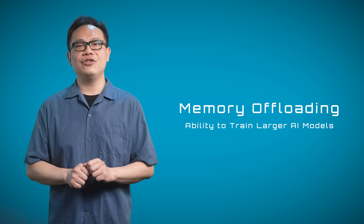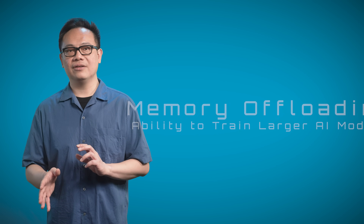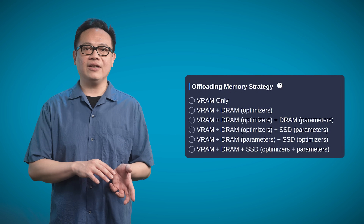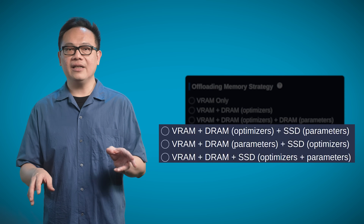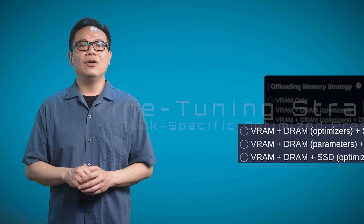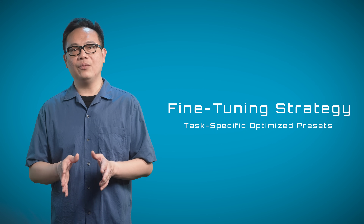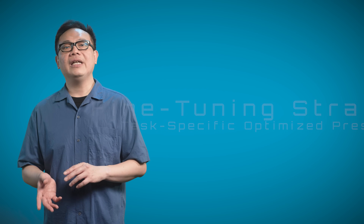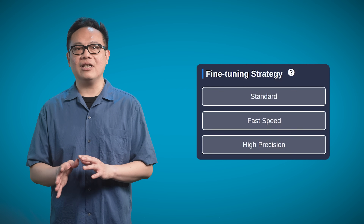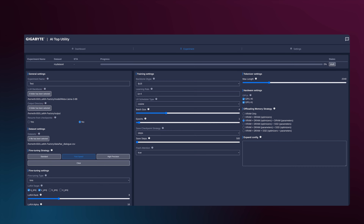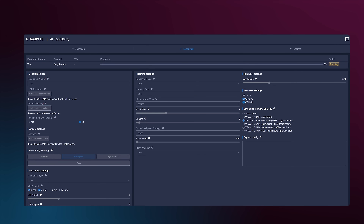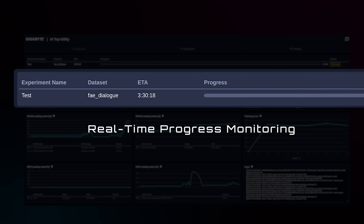As to the datasets, it features memory offloading technology to distribute massive data that is traditionally managed by VRAM across system memory and even to SSDs. For those who are not familiar with optimizing methods, it includes a variety of preset strategies that are optimized for different fine-tuning needs. It only takes a few clicks to run the fine-tune experiment, and you can instantly see the estimated duration and the progress in real-time.